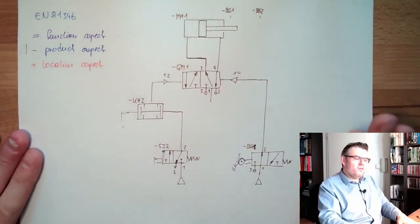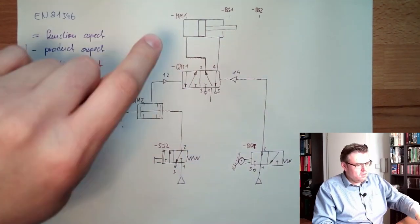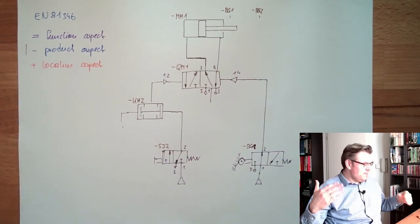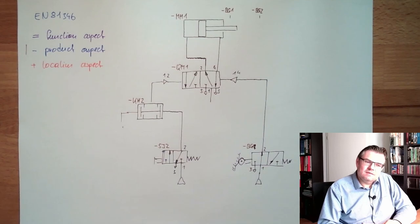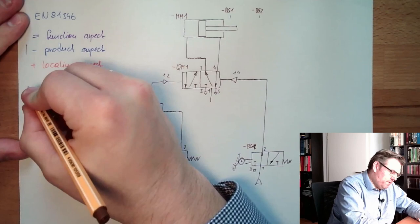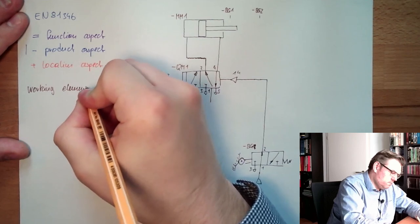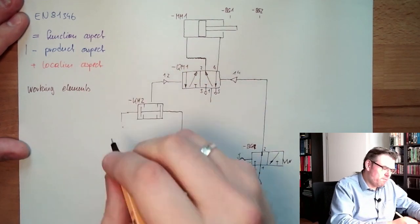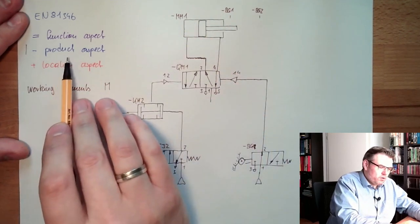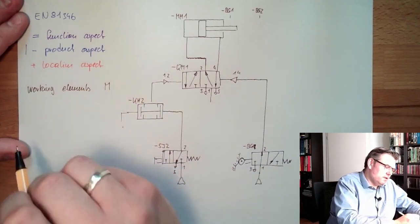I give those names and you see those names usually consist of some letters and a number. So what are the letters? The letters give an idea what this is. There are working elements, for instance. These are starting with the letter M. This is why this working element, this cylinder, is called minus product M working element. And the switching elements, these are the Qs.